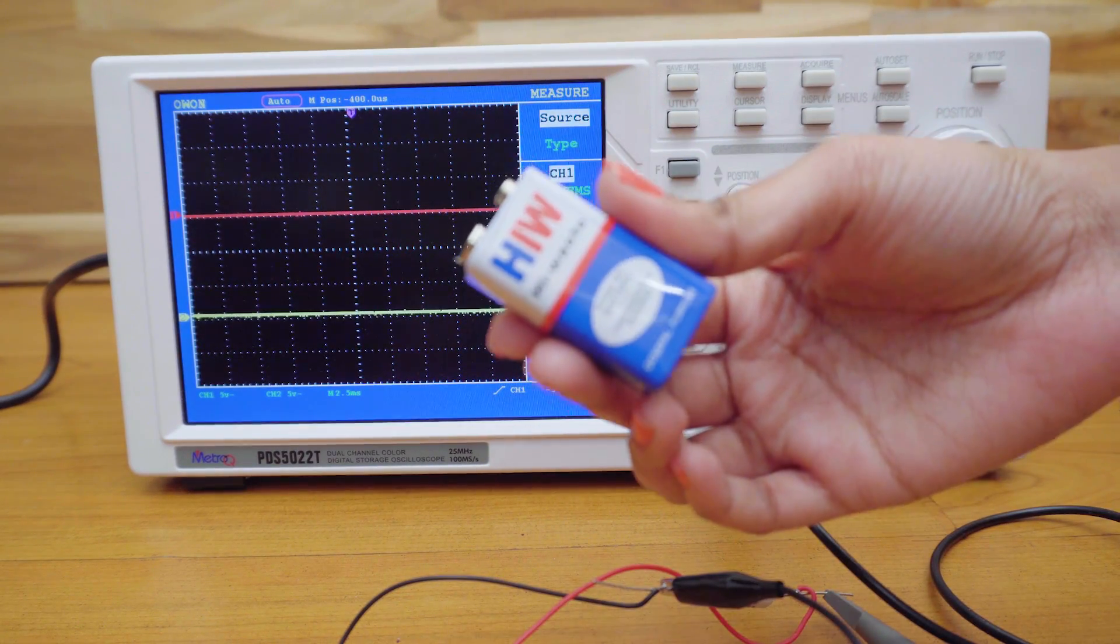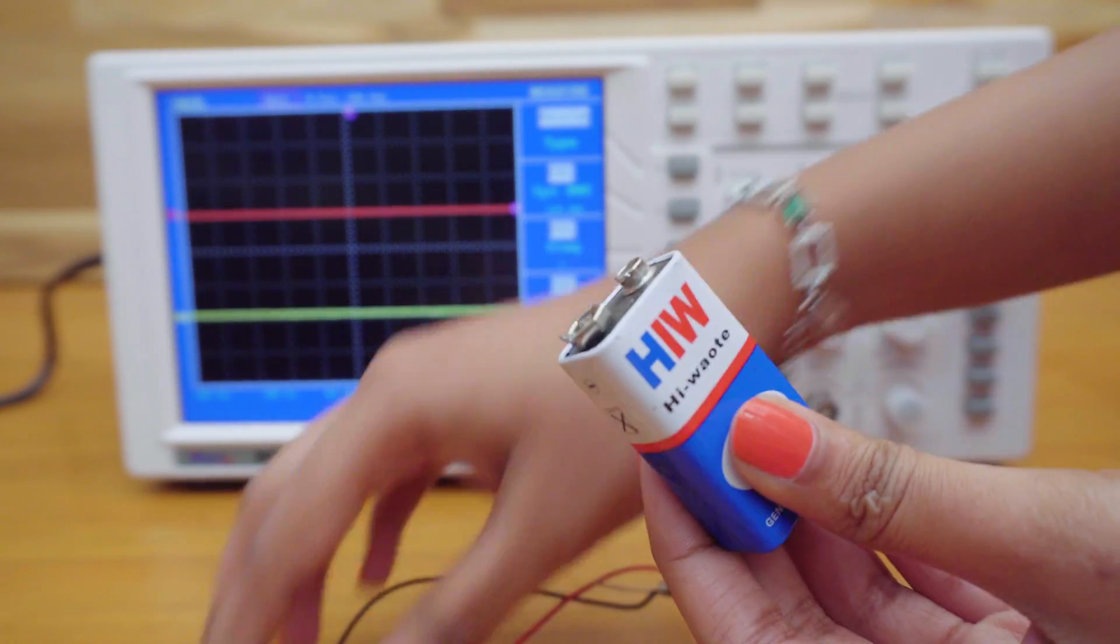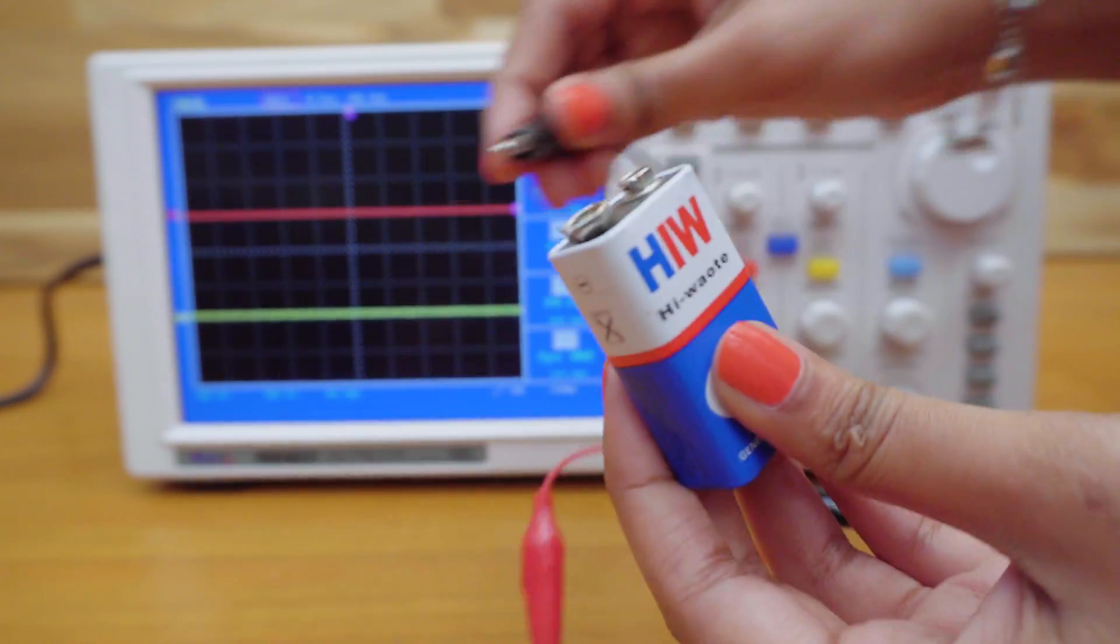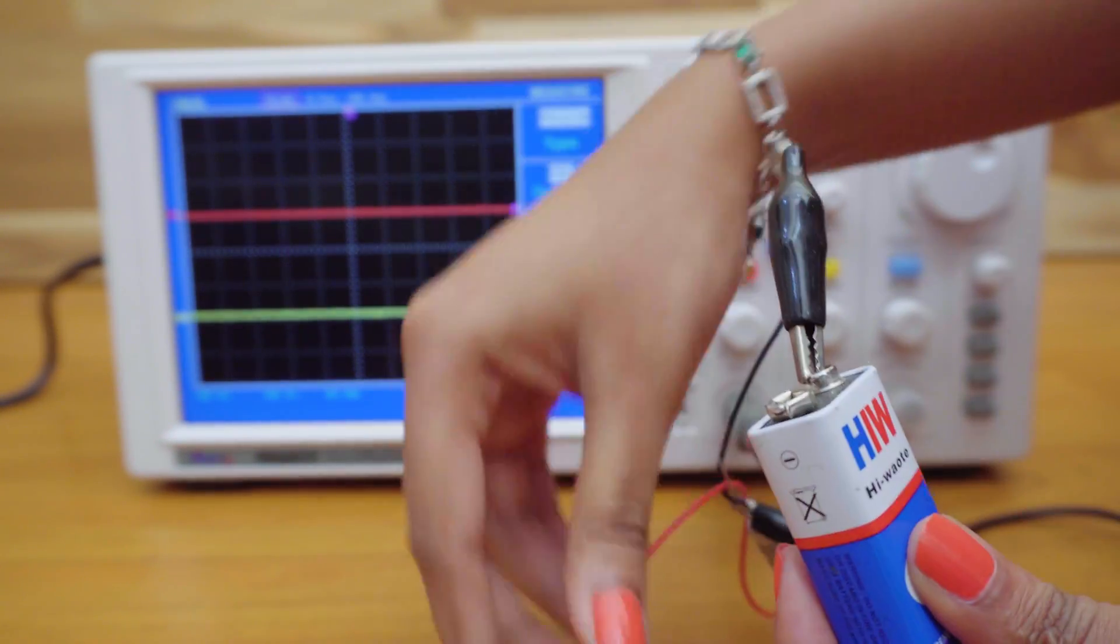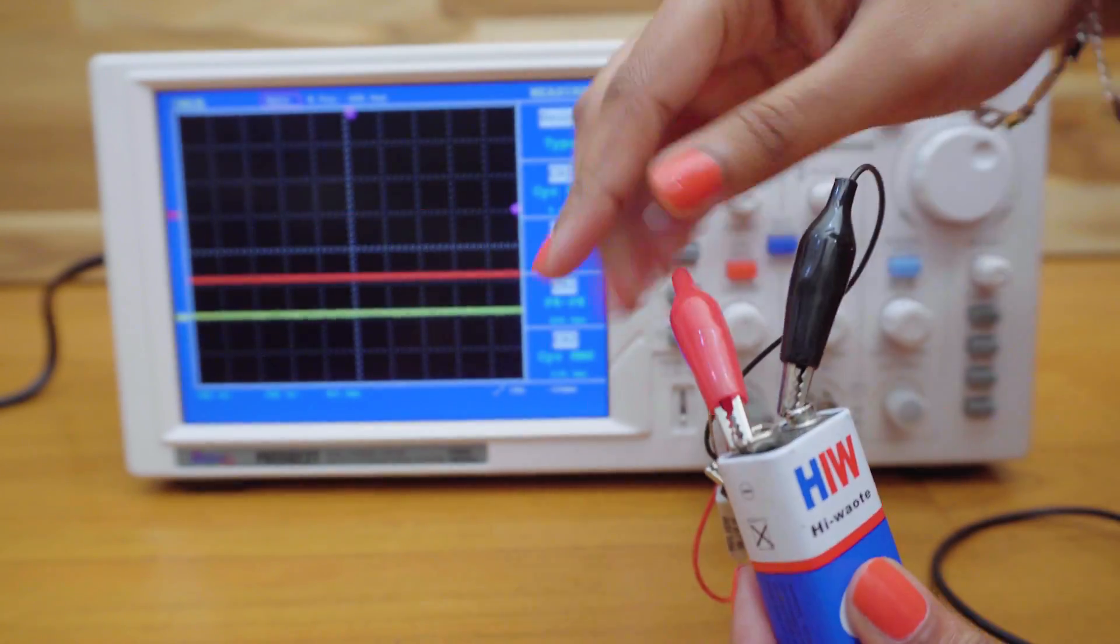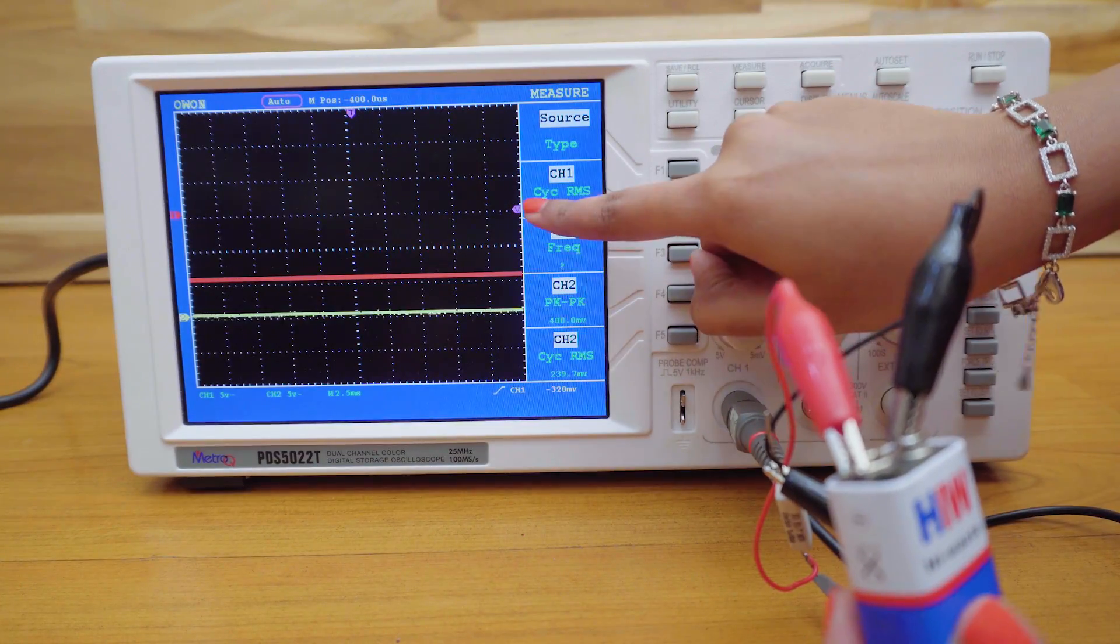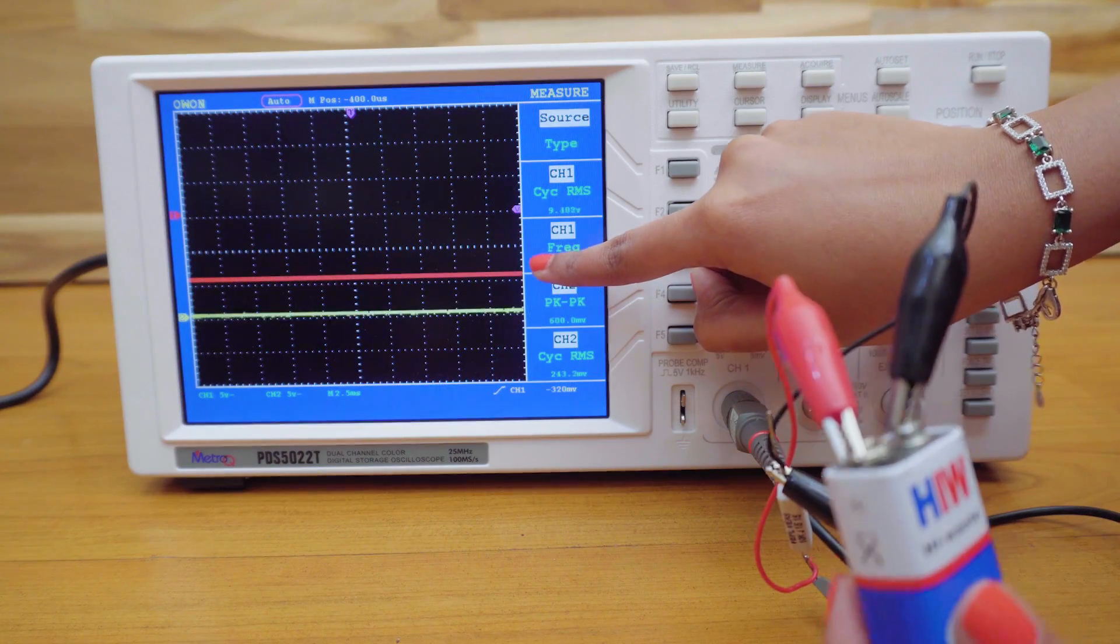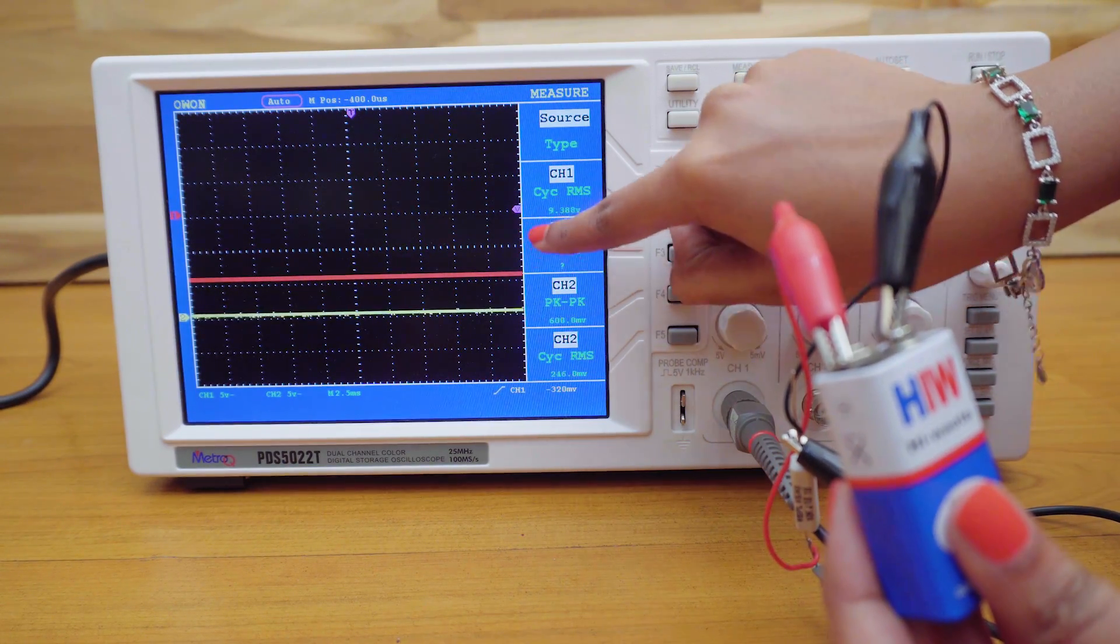First, let's check the DC voltage of this battery on the DSO. I'm connecting the probe to the battery. Now, you can see that the display is showing in negative direction. This is because I have connected the battery in reverse polarity.